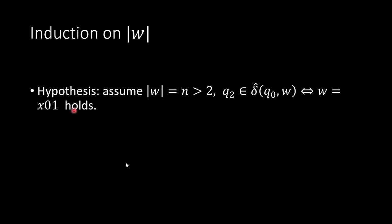Now, let's take a look at the hypothesis. Let's assume the length of w is n, and we did n larger than 2. That means the length had to be at least 3. And then we have the statement holds, which is q2 is in δ̂(q0, w) if and only if w is ended by 01.